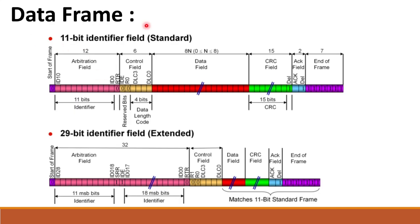First one is data frame. When will we use this data frame? For example, if I want to send data from one CAN node to another CAN node, or one CAN node to multiple CAN nodes, we should always use the data frame. We have standard CAN frame format and also extended CAN frame format. These two standards we already discussed in the previous sessions, field by field.